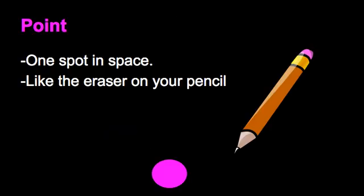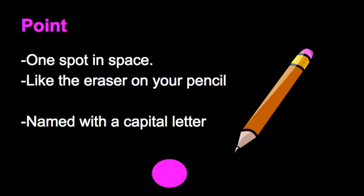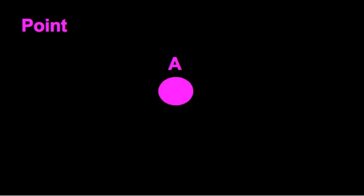So a point is just that — it's one spot in space. You can think of it like the eraser on your pencil, or maybe the tip of your pencil. And how points are named: if we wanted to name that point, we would name it with one capital letter. In this case, let's call it point A.